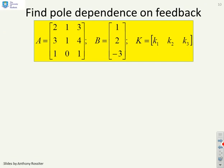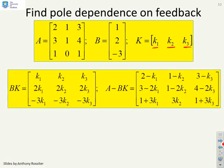What happens if we go to a 3 by 3 example? Here, K has got three parameters: k1, k2, and k3. Using the same methodology, I can find A minus BK. Here it is, and you notice these k parameters appear in every term in this matrix.